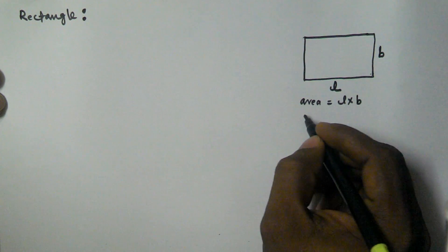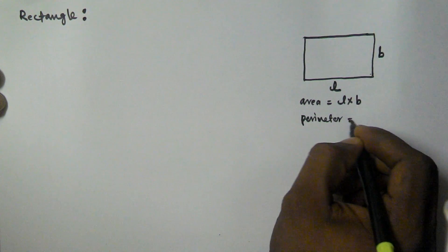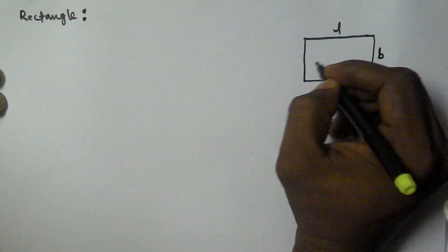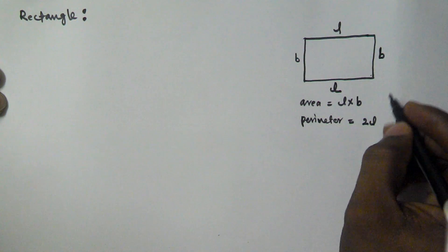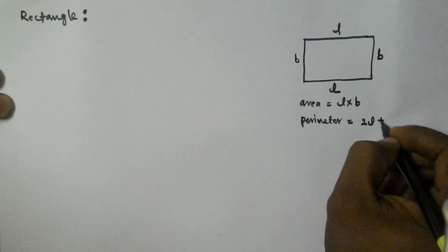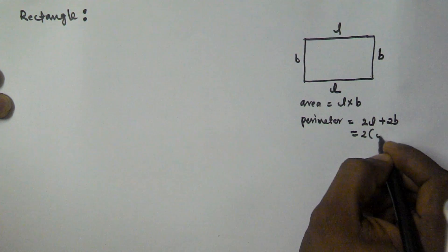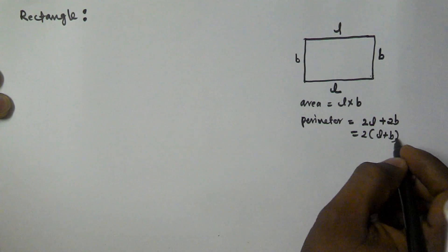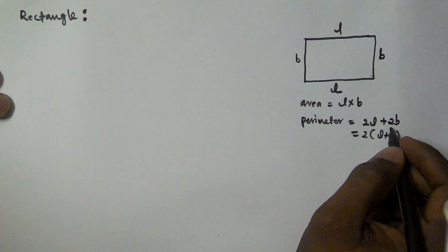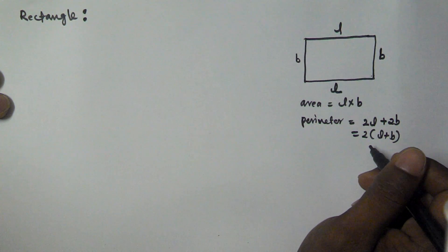The perimeter of the rectangle is given by two lengths and two breadths. So the perimeter of the rectangle is equal to 2L plus 2B, which is equal to 2 into (L plus B). These are the two important formulas of the rectangle.